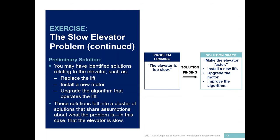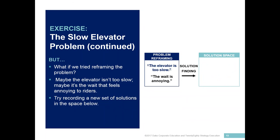Then students move on to the third part of the exercise, which asks them to reframe the problem and perhaps generate new solution ideas. The question is: what if we tried reframing the problem? Maybe the elevator isn't too slow — maybe it's the wait that feels annoying to the riders. So students are then asked to generate a new set of solutions based on the reframed problem that the wait is annoying.